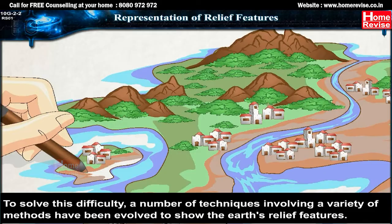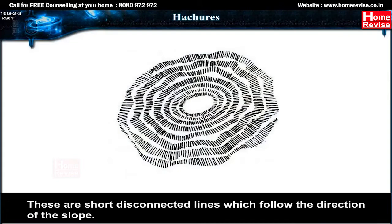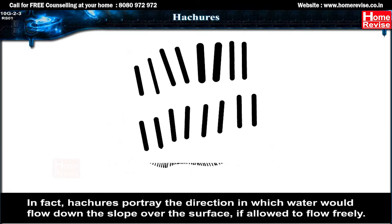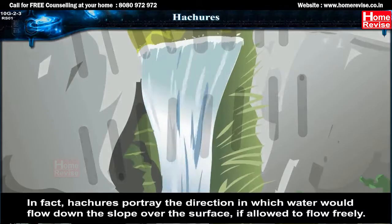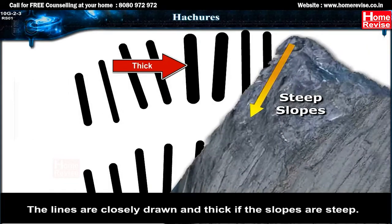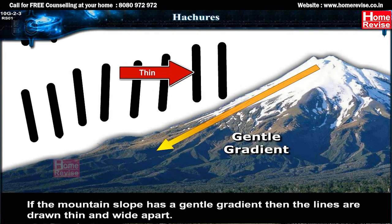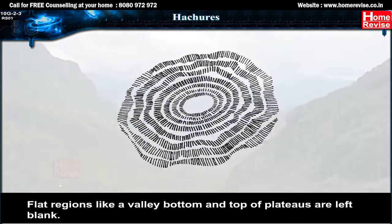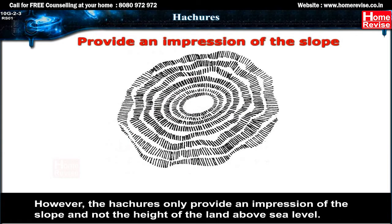The principal methods used are hachures, hill shading, form lines, and contours. Hachures are short disconnected lines which follow the direction of the slope — they portray the direction in which water would flow down the slope if allowed to flow freely. The lines are closely drawn and thick if the slopes are steep; if the mountain slope has a gentle gradient, the lines are drawn thin and wide apart. Flat regions like valley bottoms and tops of plateaus are left blank.